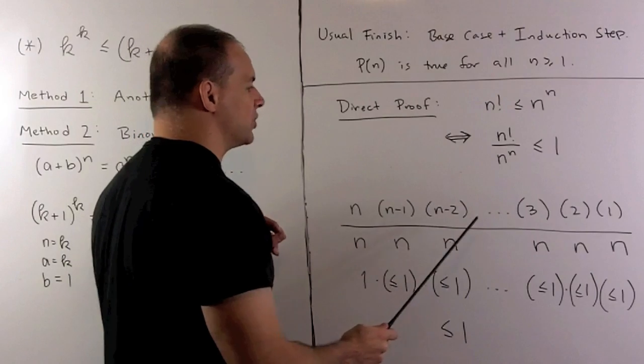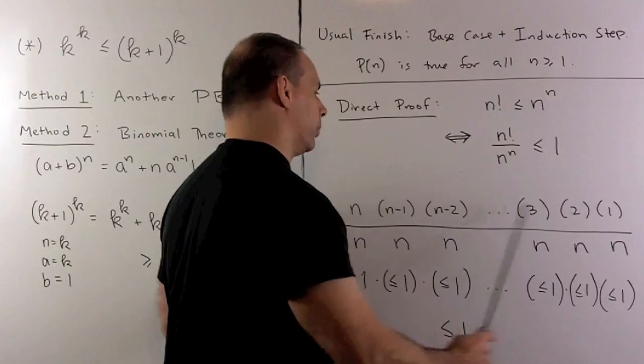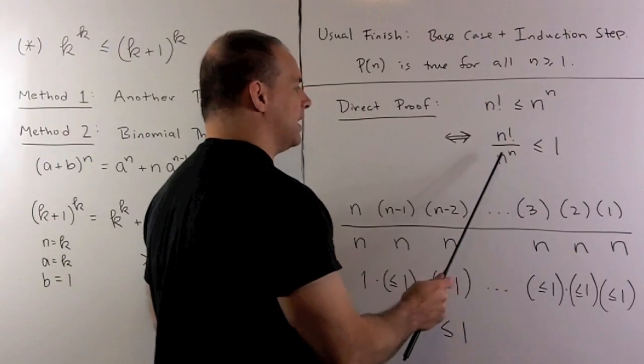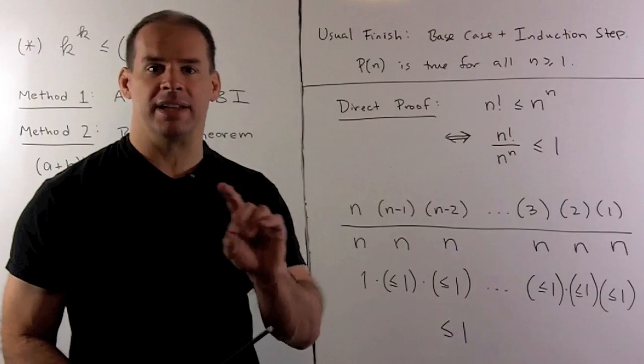So we go n, n minus 1, n minus 2, 3, 2, 1, multiply it out. For n to the nth power, we're just multiplying n by itself, n times. So for each term of n factorial, we're going to have a term for n to the n.